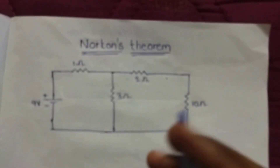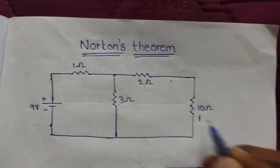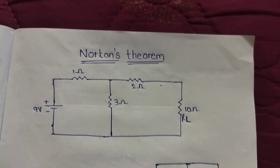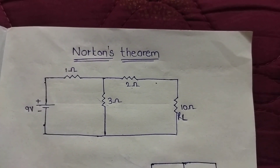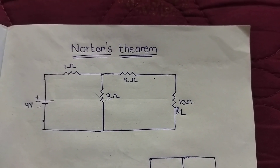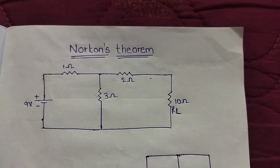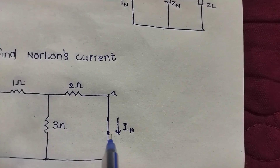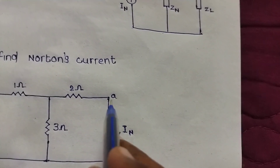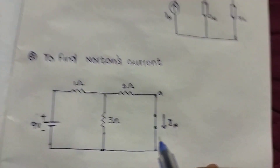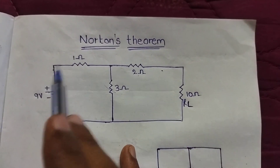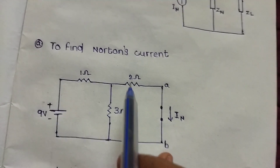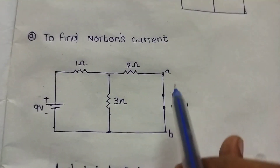This is the given circuit. In this given circuit, there is a load — the load resistance. The next step is to find Norton's terminal. The remaining circuit consists of 9 volts, 1 ohm, 2 ohms, 3 ohms, and that is IN.